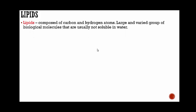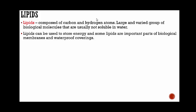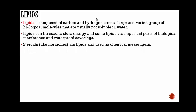Let's talk about lipids. Lipids are composed of carbon and hydrogen atoms — they are a large and varied group of biological molecules that are usually not soluble in water. The key is that a lipid has carbon and hydrogen. Lipids can be used to store energy, and some are important parts of biological membranes and waterproof coverings. Steroids like hormones are lipids used as chemical messengers. Lipids include fats, oils, and waxes — as you may have noticed when washing a pan with used oil, oil and water do not mix.